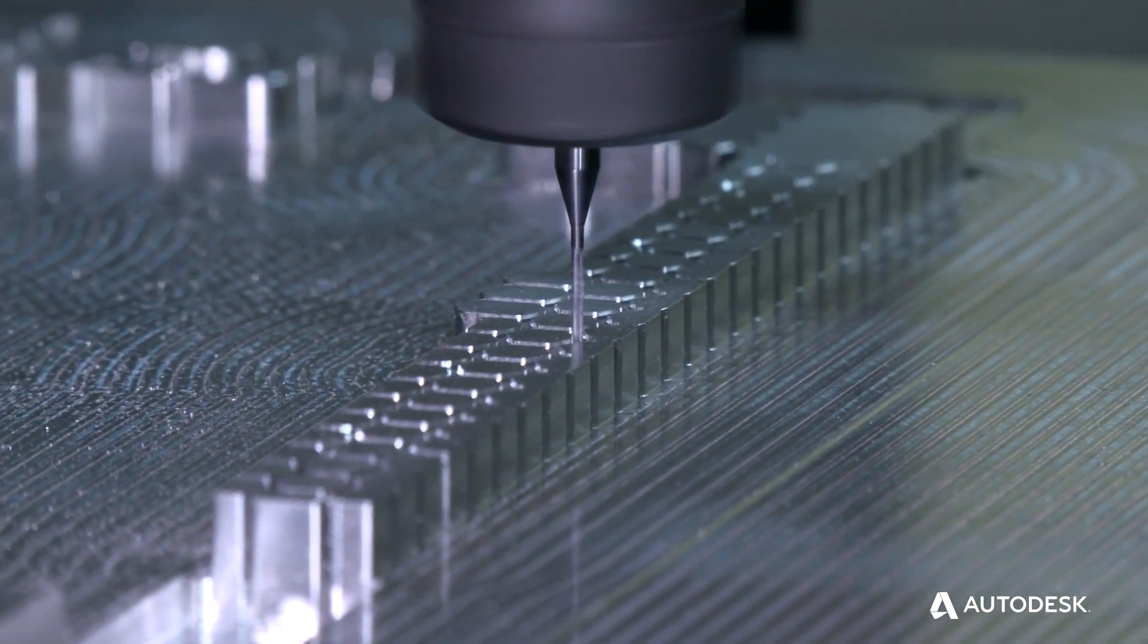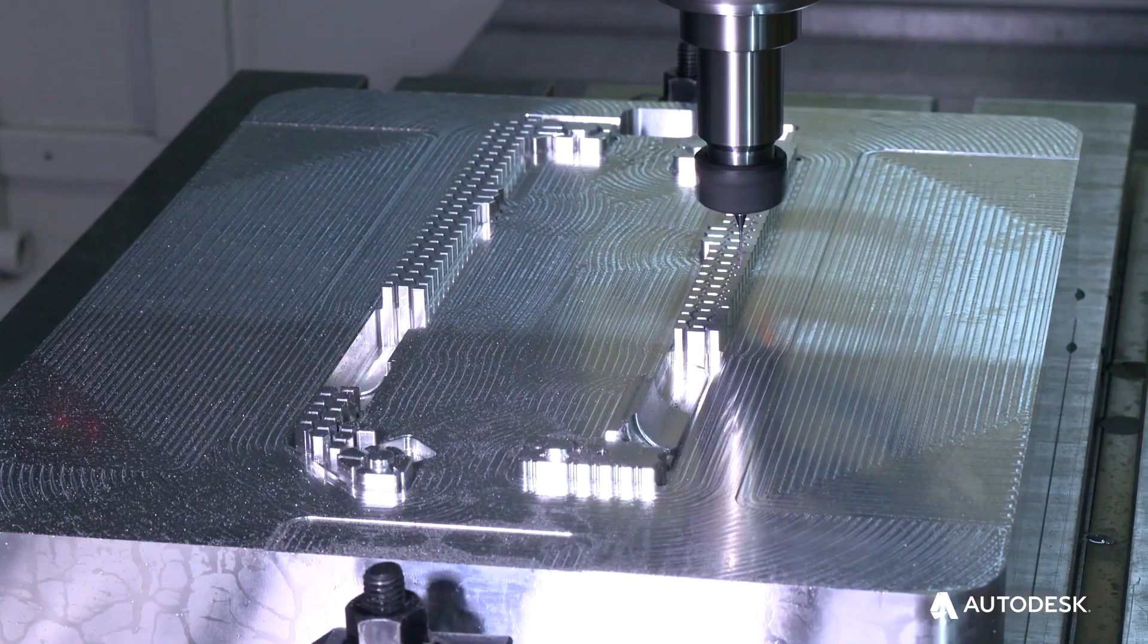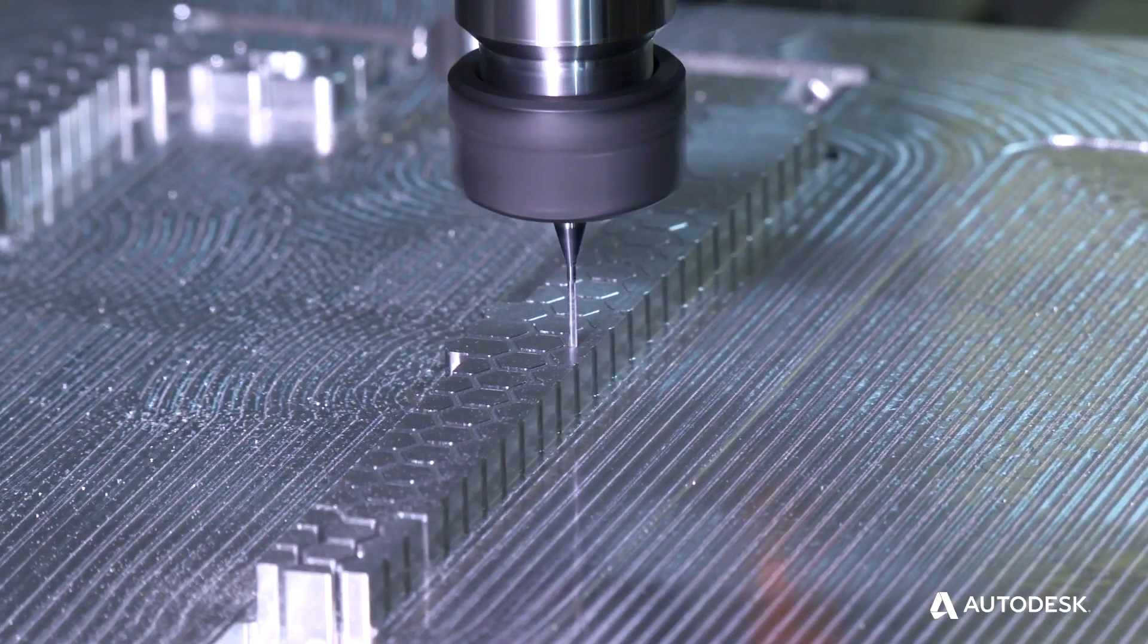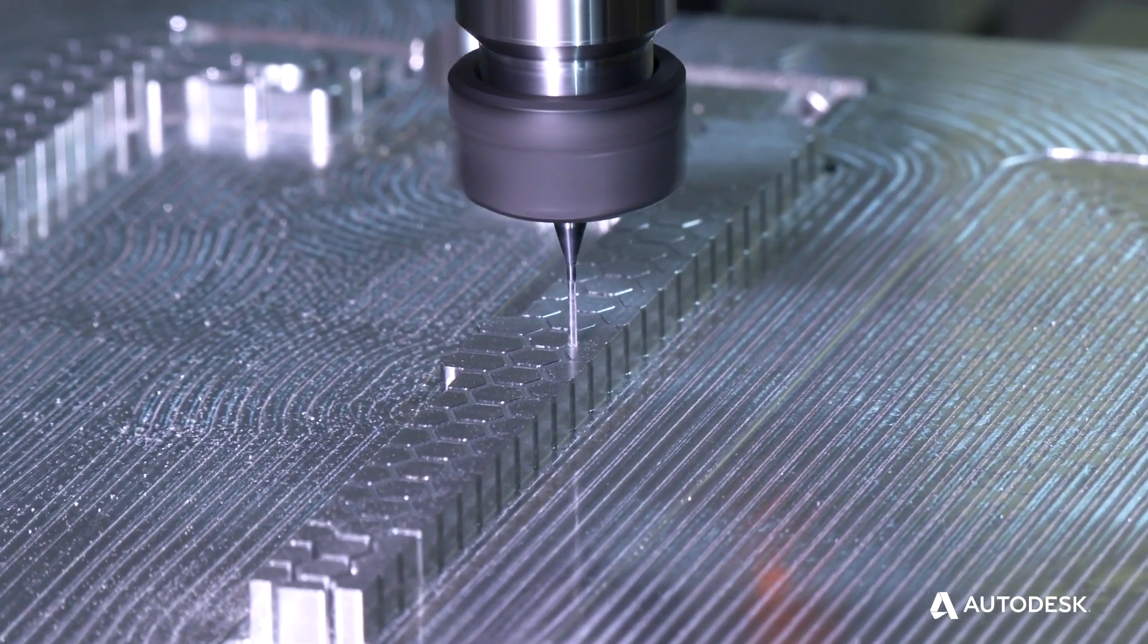The rib machining has just been a huge advantage. At IQ Manufacturing, we do a lot of cores and cavities and complex molding components. That means there's a lot of ribs in these jobs. They're very difficult to machine and time-consuming.